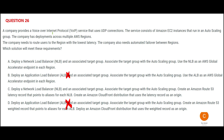Whenever I see a requirement to route users to the region with the lowest latency, that means there has to be a latency record and a region — this is a Route 53 question. I do not see Route 53 in option A, so option A would be wrong and option C is my final answer.